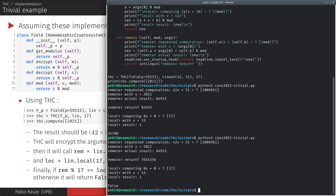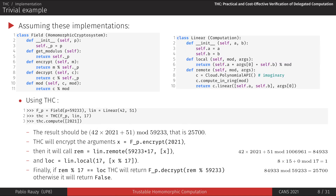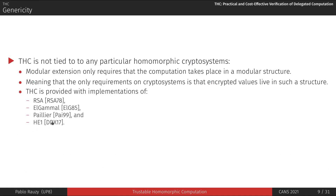The way THC works is not tied to any particular cryptosystem. All that is needed is that the remote computation takes place in a modular structure — that is, any cryptosystem that has its encrypted values in such a structure should be compatible with THC. As examples, we provide implementations of RSA, ElGamal, Paillier, and HE1 in the THC package.